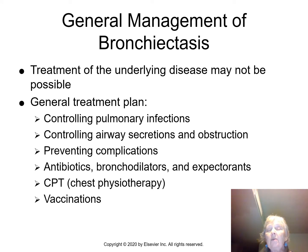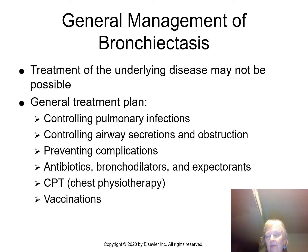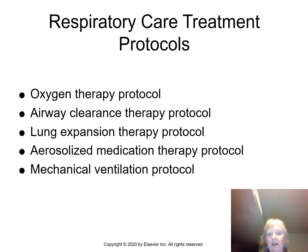Treatment goals include controlling infections, managing secretions and obstruction, and preventing complications. Interventions include antibiotics, bronchodilators, expectorants, chest physiotherapy, and vaccinations. Critically, patient and family cooperation and buy-in are essential — without that, nothing will work. Additional therapies include oxygen therapy, airway clearance, lung expansion techniques, exercise, medication, and mechanical ventilation if needed. Bronchiectasis is something you want to avoid if at all possible.